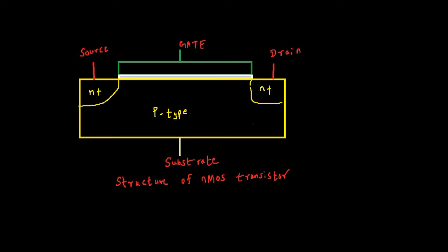Let's analyze what happens if we apply a positive voltage to the gate terminal. We already know this is a P-type substrate, which means holes are the dominant carriers. When you apply a positive voltage to the gate, the holes near the interface of the dielectric and substrate get repelled.